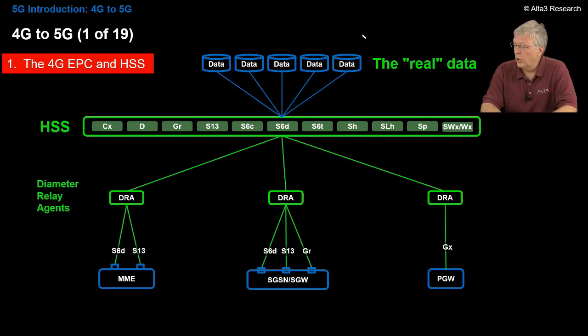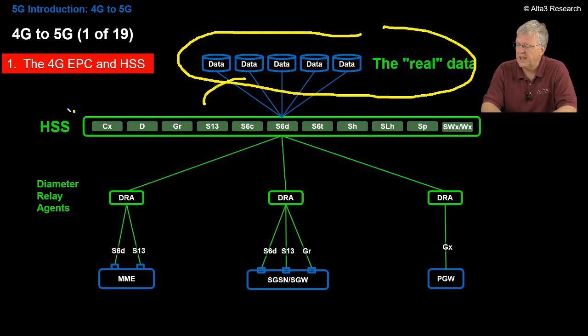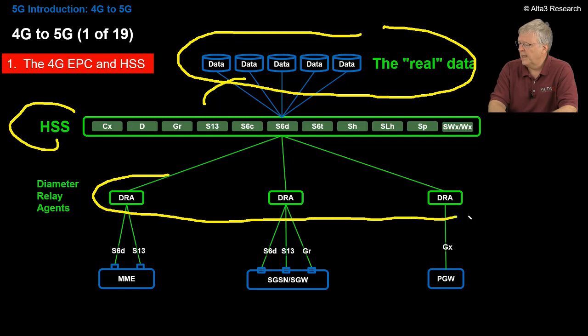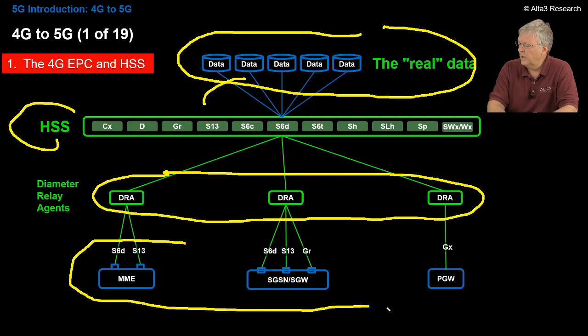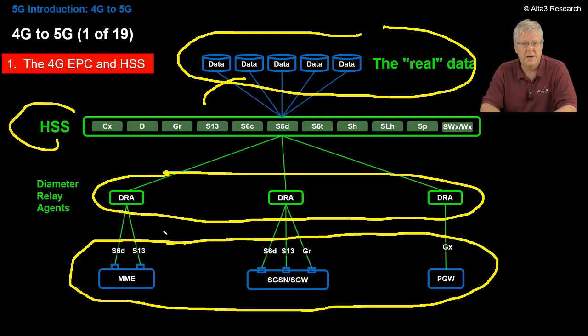So here you see the real database. This is the information that actually is above the HSS. And down below here we see diameter relay agents, of course carrying the diameter protocol. And underneath it we see the classic EPC or the Evolve Packet Core products. These are the devices that we're going to convert from 4G to 5G.